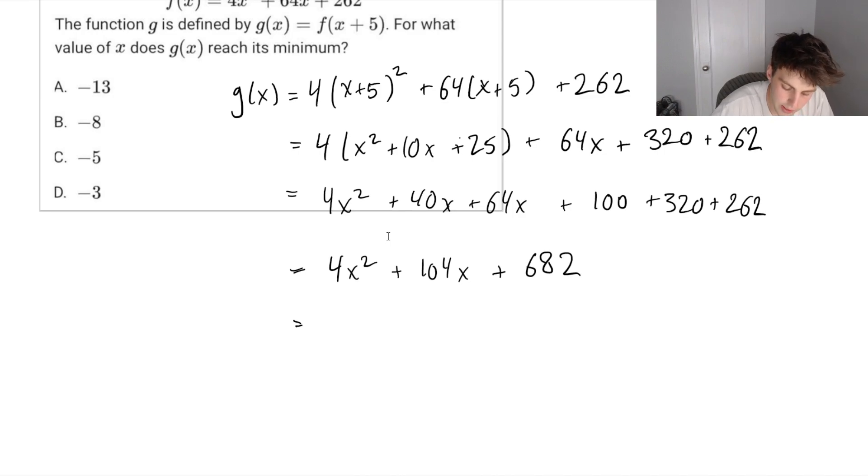So to complete the square here, you can start by factoring out a 4 from our first two terms. We're going to be left with x squared plus 26 times x. Close the brackets and we'll leave it with plus 682. And now this is where we complete the square. We're going to do plus half of b squared. Half of b, remember b is the coefficient that's next to our x variable.